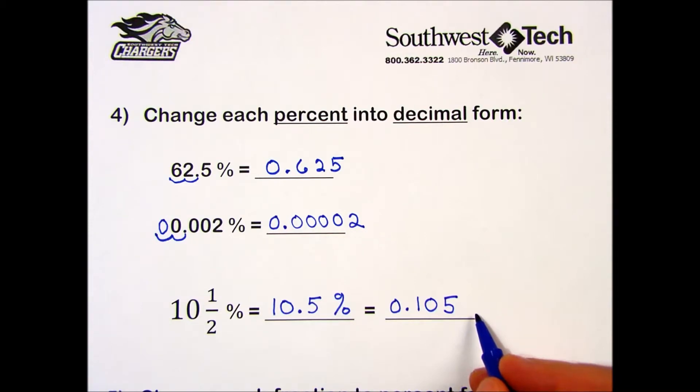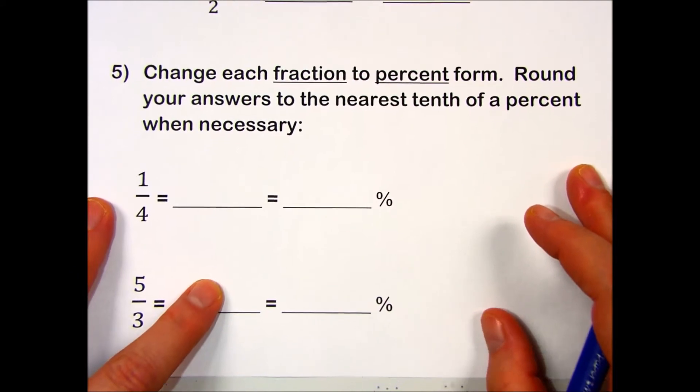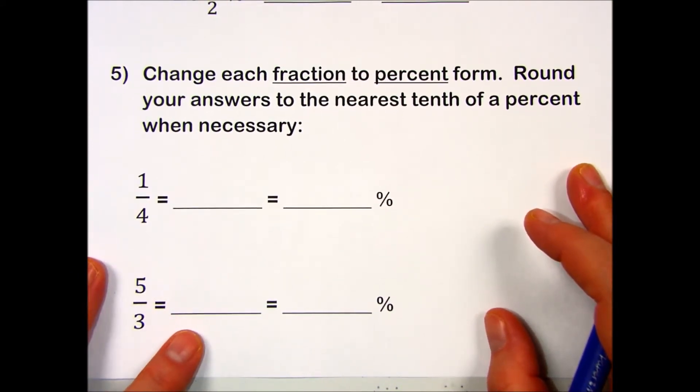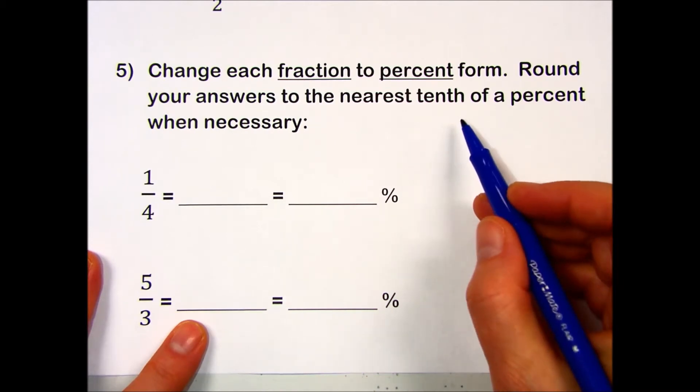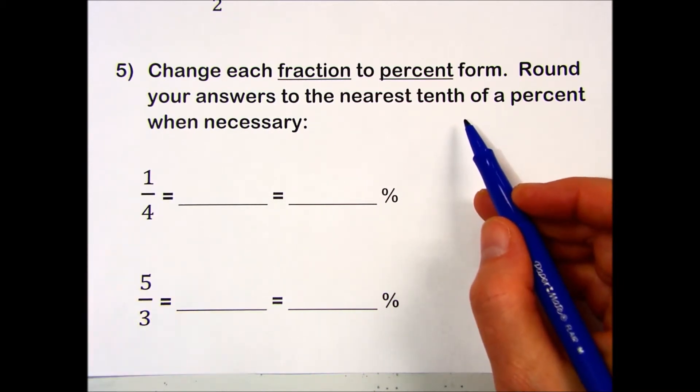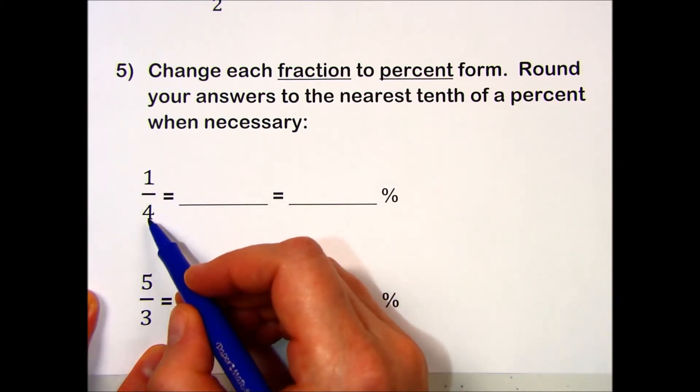Let's also try number five. We're going to change fractions to percent form and round our answers to the nearest tenth of a percent when necessary. My first step needs to be dividing 1 divided by 4 to get a decimal number. You can use a calculator if you need a little help with this.